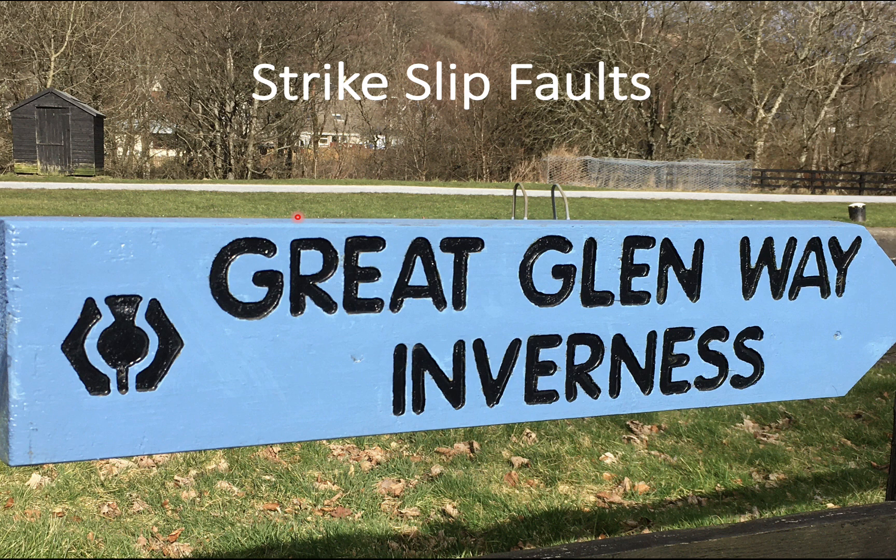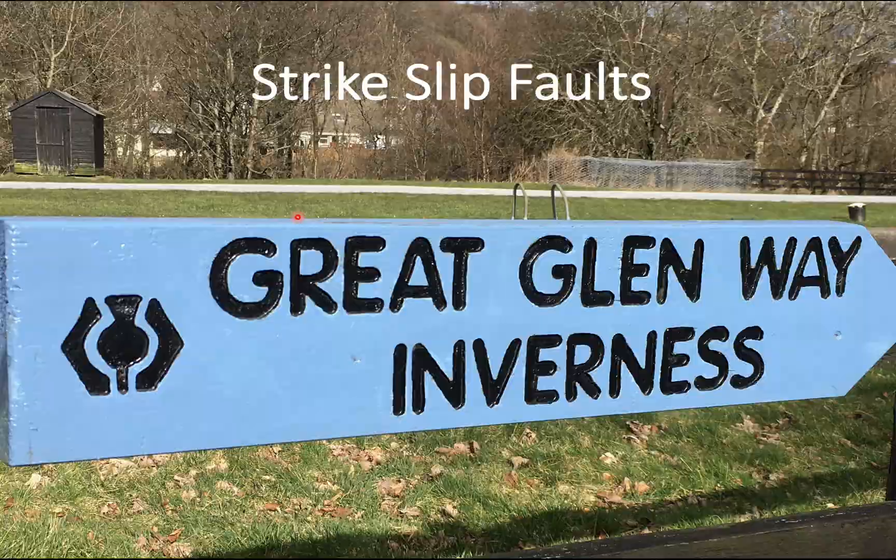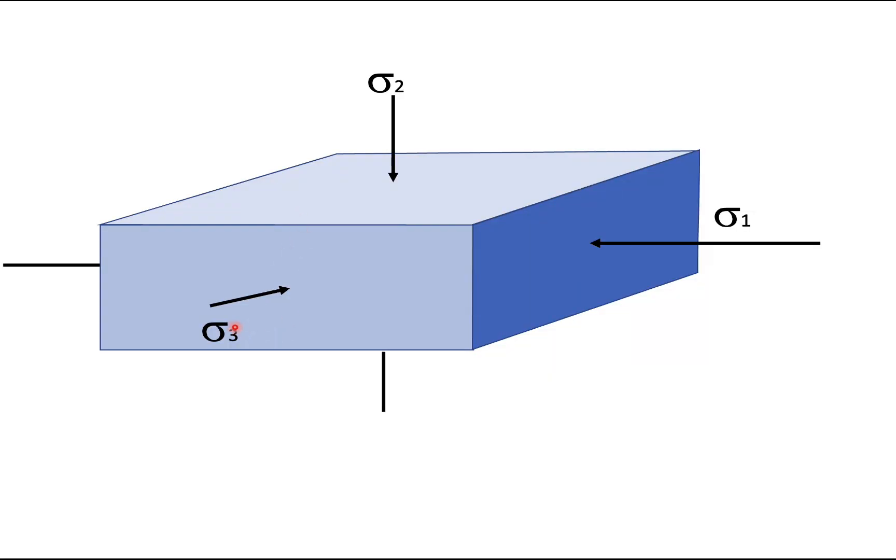And finally, strike slip faults. So the Great Glen is the obvious strike slip fault in Scotland. In this case we have sigma 1 and sigma 3 in the horizontal plane and sigma 2 is now gravity.